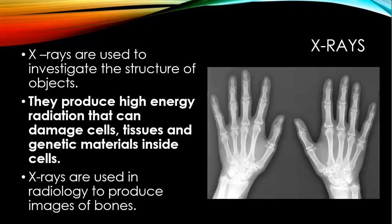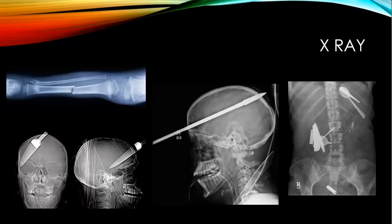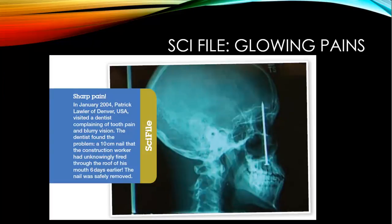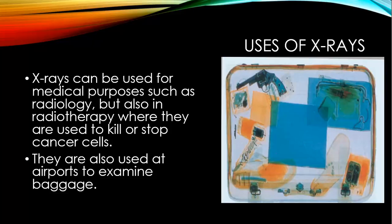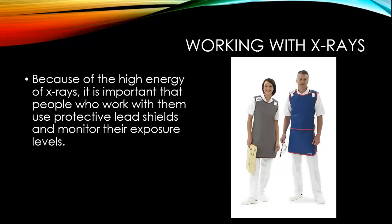X-rays are used to investigate the structure of objects. They produce high energy radiation that can damage cells, tissues and genetic material inside cells. X-rays are used in radiology to produce images of bones. X-rays can also be used in radiotherapy where they're used to kill or stop cancer cells, and at airports to examine baggage. Because of the high energy of X-rays, it's important that people who work with them use protective lead shields and monitor their exposure levels.